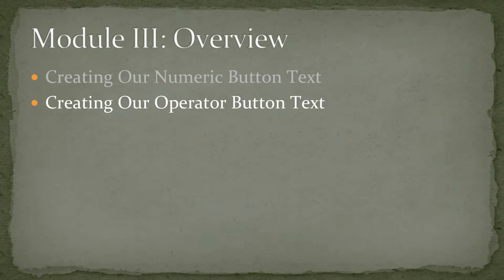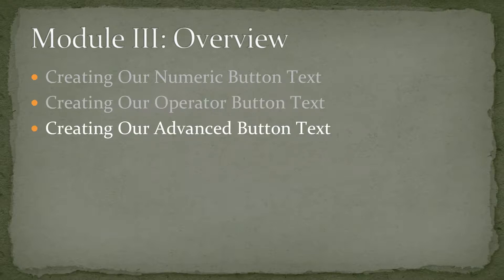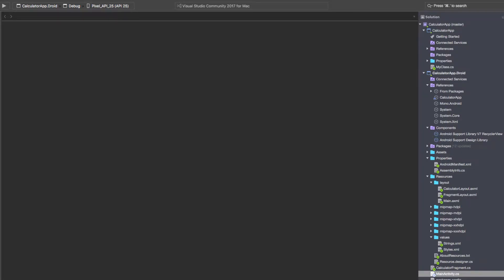Our next one after this is our operator button text, which is just going to be our multiplication and divide. And our advanced button text is going to be our trig functions and our inverse functions in our calculator. Pretty much this is going to be a helper class as we continue developing our calculator app. Before we create our views for our buttons — numeric, operator, and advanced — we are going to need to create a class that contains all the text we need for those.